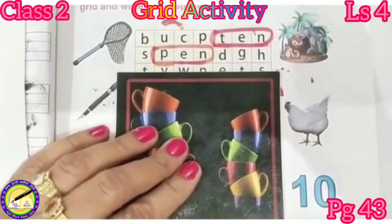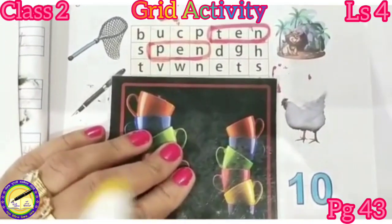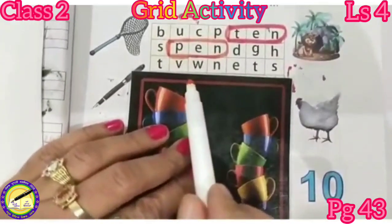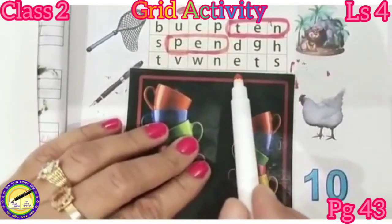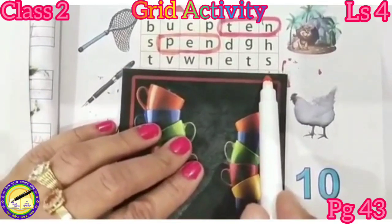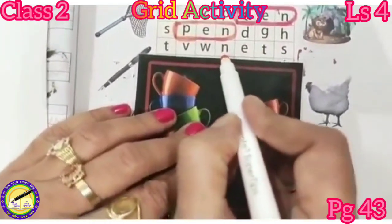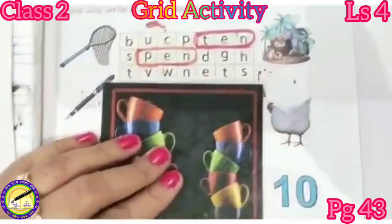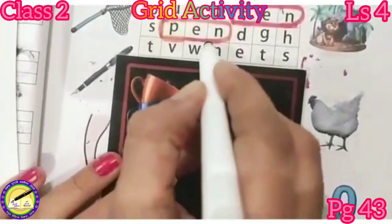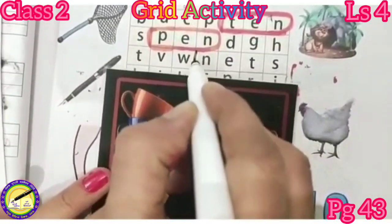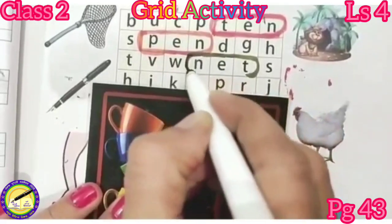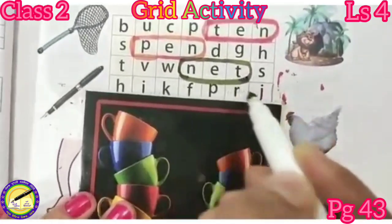Come on to the next line: T, V, W, N, E, T, S. Yes! Which word is here? N, E, T — net. Let us encircle it. So we have encircled the word net.